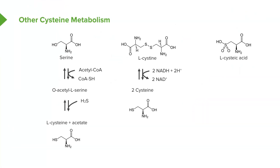The last way of making cysteine starts with an oxidized form of cysteine known as cysteic acid. Cysteine is fairly readily oxidized, so it's not uncommon that cells will have L-cysteic acid within them. To make cysteine from that simply involves a reduction involving hydrogen sulfide, as we can see here. In the process, the sulfur is donated to the cysteic acid, the sulfite — which was the oxidized sulfur — is released, and cysteine is produced.